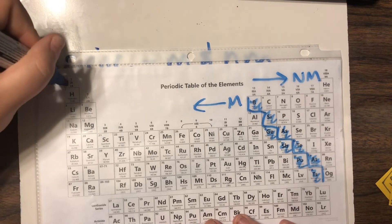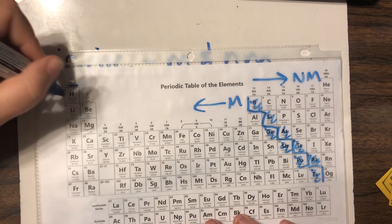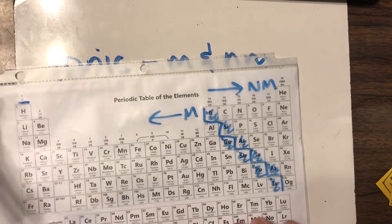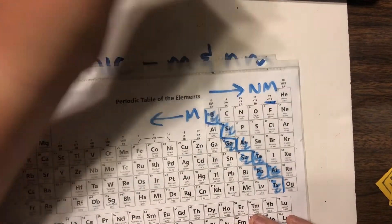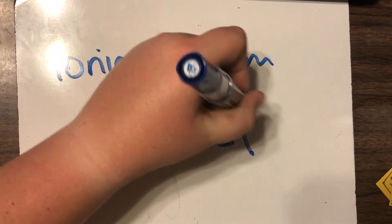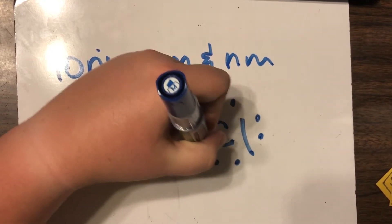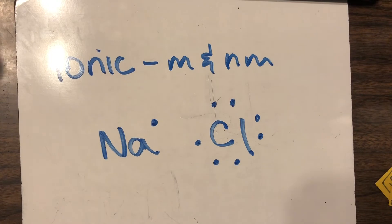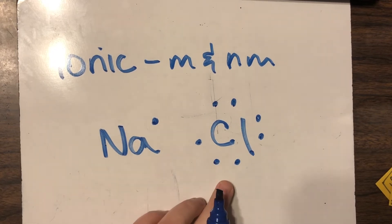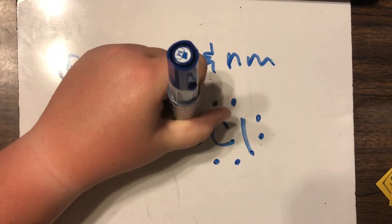Sodium over here is under group one and it's also labeled 1a. That 1a tells us that it has one valence electron. Chlorine over here is under group 17 and it's also labeled 7a. That 7 tells us that chlorine has seven valence electrons. Now they're going to try and form a set of eight and they're going to do whatever's easiest. For sodium its options are to give away one or to take seven. Chlorine could either give away seven or take one. It's easier for it to take one and it's easier for sodium to give away one.